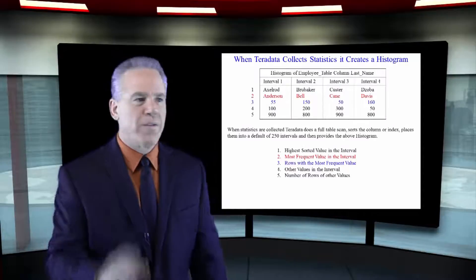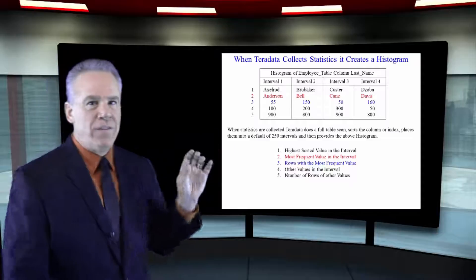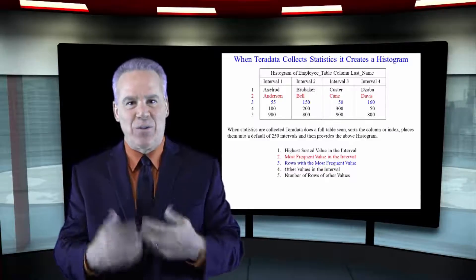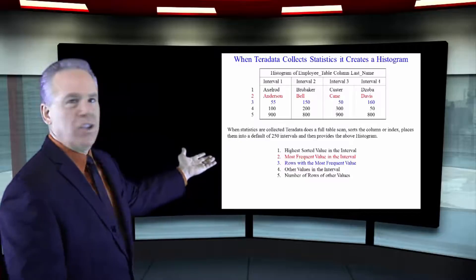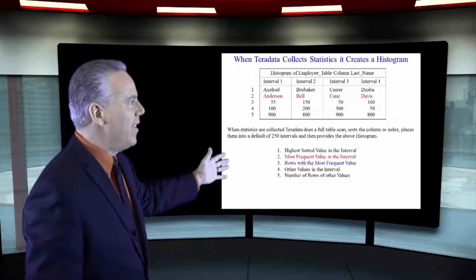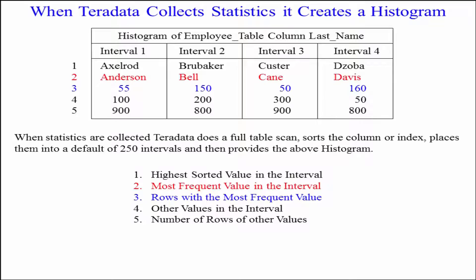The very first thing you see in every interval is the very last name in the interval. We know that someone's name could have started with AB. That would have been the first row in the interval if it was sorted, and then it went all the way to Axelrod. So if your name was Anderson, you would fall between the AB and the Axelrod. The parsing engine knows which interval you're in based on this.